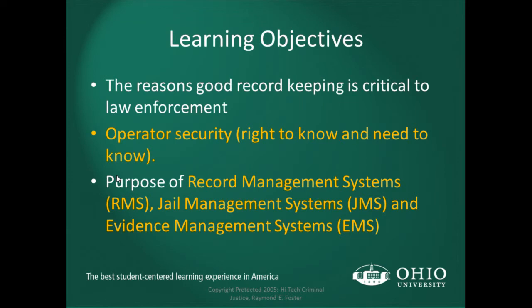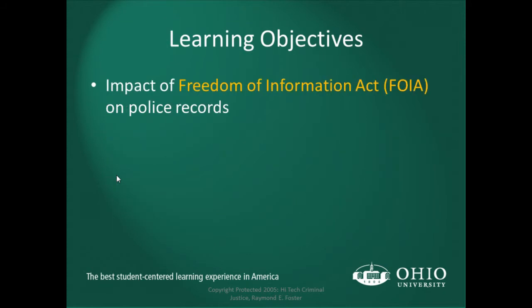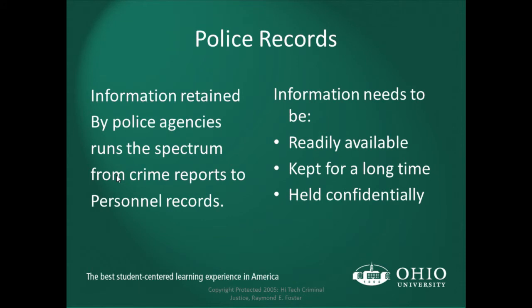The learning objectives for this week are: the reason good records keeping is so critical to law enforcement; operator security; the right to know versus the need to know — right to know is position or function based, whereas need to know is situational based; the purpose of records management systems, RMS, JMS, EMS, jail management, and evidence management systems; and the impact of the Freedom of Information Act on police records. Information retained by a police agency runs the spectrum from crime reports to personnel reports.